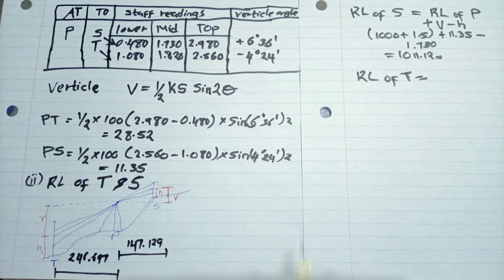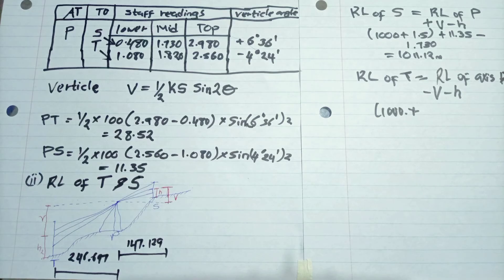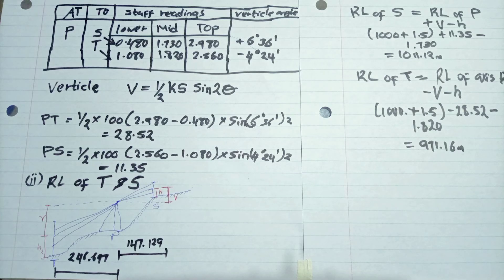Then the same we do for T. So that is the reduced level of P minus V minus H, as you can see in the diagram. So we use 1000 plus 1.5 minus V, which is 28.52, minus 1.85. So we get our reduced level as that.